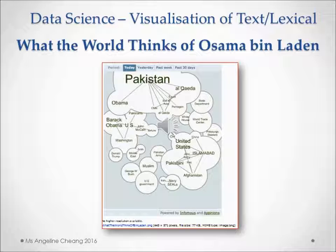Here we have a lexical text data visualization of internet commentary about the US operation that led to the killing of Osama Bin Laden. The cloud on the left was developed at Opinions, and the cloud on the right is a Twitter search for the term 'Osama Bin Laden.' Judging by the occurrence of the words, what sense can you make of public opinion on Opinion and over Twitter?